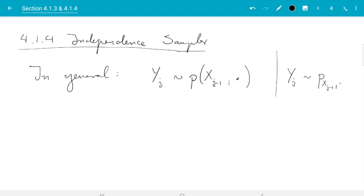In the case of the independent sampler, we don't make use of the right to adjust the proposals depending on X_{j-1}. Instead, Y_j is sampled just from a density which only depends on Y but is independent of the previous state.